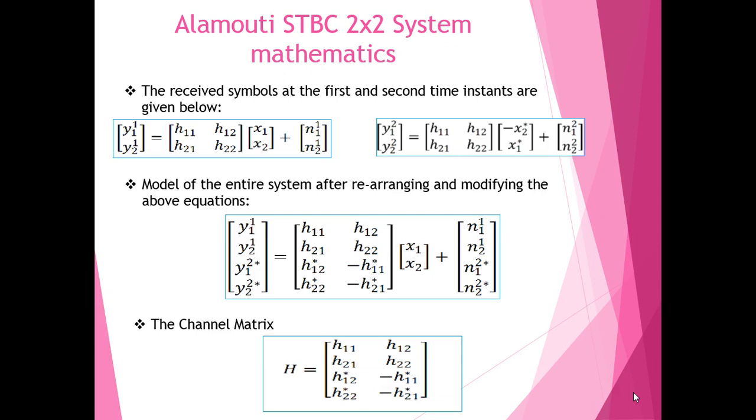Similarly, we have the second equation for the received symbols at the second time instant. The only difference is that the transmitted symbols here are -X2* and X1* because of the Alamouti STBC application. Now after some rearrangement and modification, the entire system can be modeled as shown in the equation. The value of the channel matrix H is also provided here.